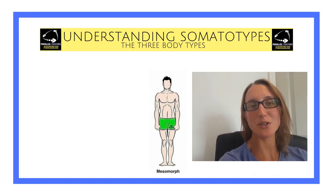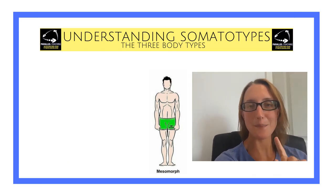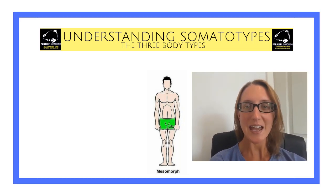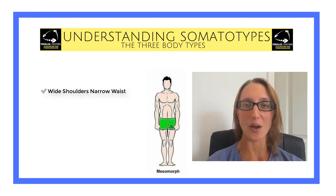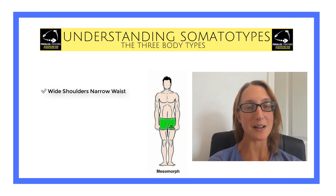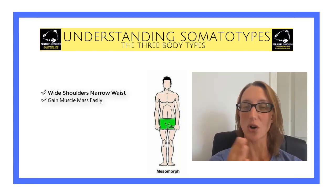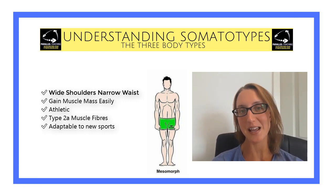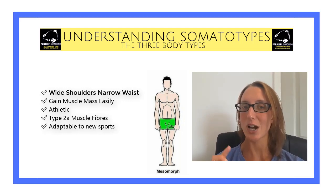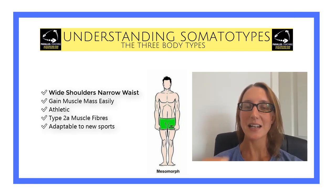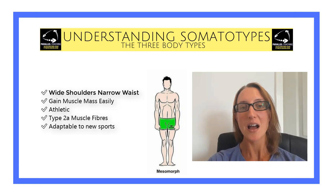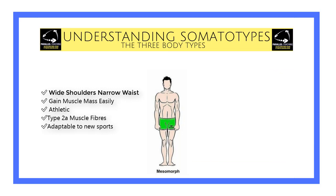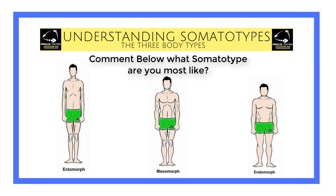The third one is a mixture between the two — a mesomorph. A mesomorph is that happy medium, generally with wide shoulders and narrow hips, and they gain muscle mass quite easily. They can lend themselves to lots of different sports and athletic abilities because they predominantly have type 2a muscle fibers. Type 2a muscle fibers are adaptive — they can act a little bit more aerobic or a little bit more anaerobic, and they're great at increasing in size as well.